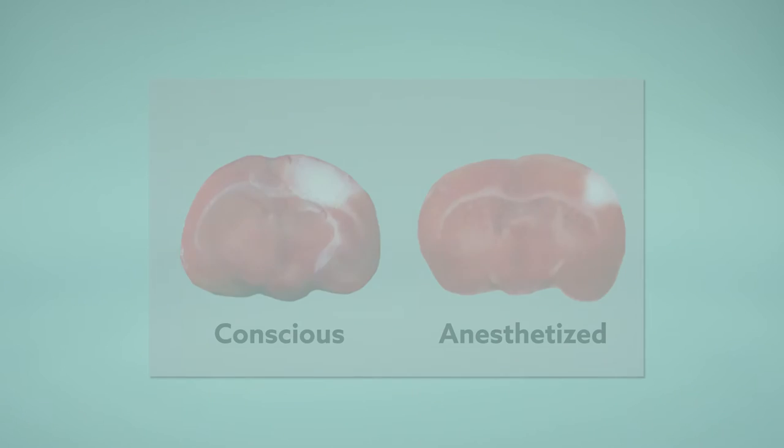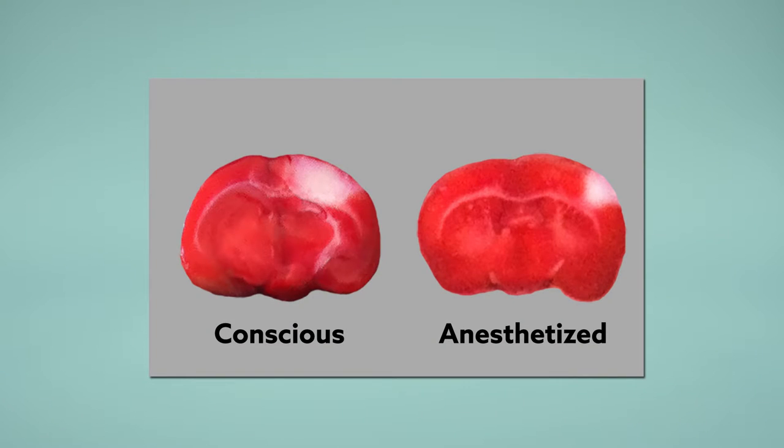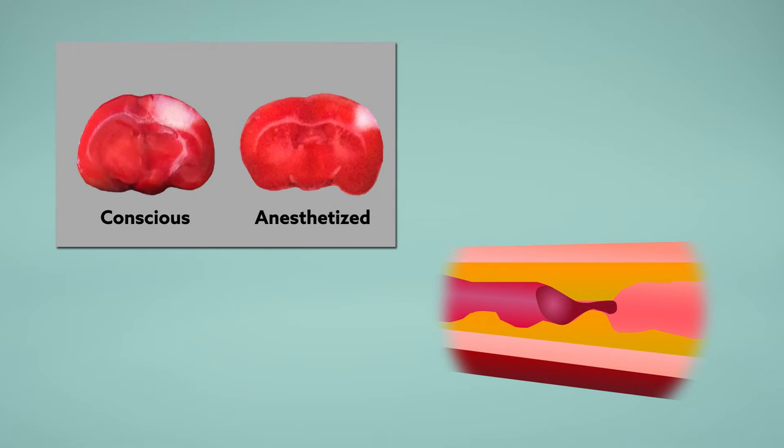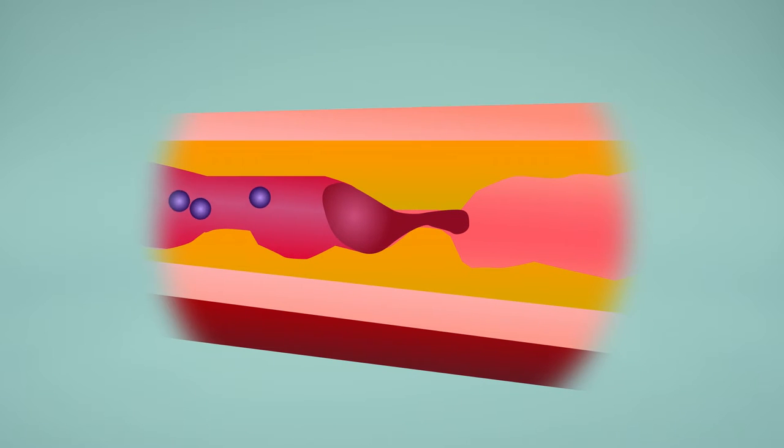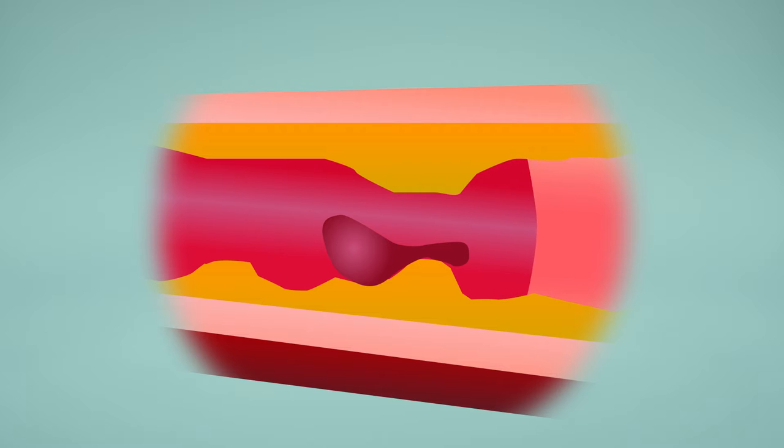The findings suggest that anesthetics alter cerebral blood flow as soon as a stroke begins and can safeguard the brain from damage. The effects of isoflurane on the neurovascular system are complicated, but as a potent vasodilator, the drug might widen blood vessels and reduce injury when clots starve parts of the brain of food and oxygen.